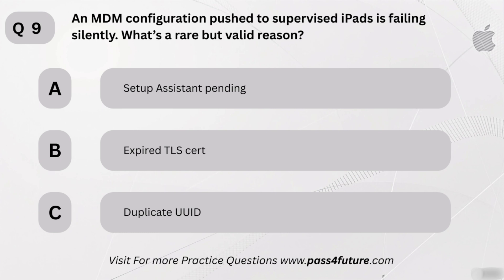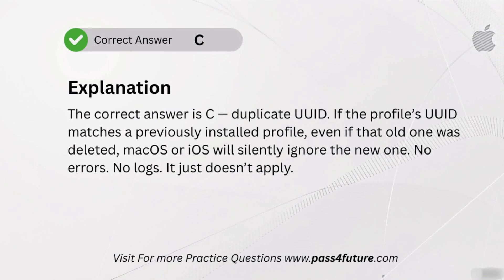An MDM configuration pushed to supervised iPads is failing silently. What's a rare but valid reason? A. Setup Assistant pending. B. Expired TLS cert. C. Duplicate UUID. The correct answer is C — duplicate UUID. If the profile's UUID matches a previously installed profile, even if that old one was deleted, macOS or iOS will silently ignore the new one. No errors. No logs. It just doesn't apply.